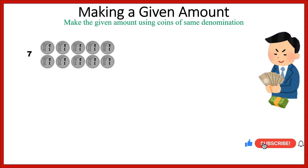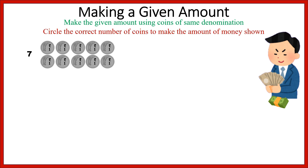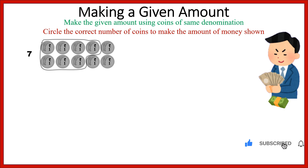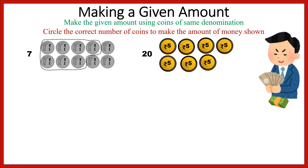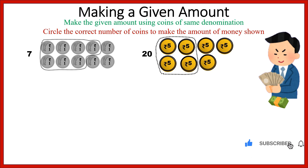Here you have some 1 rupee coins. The question is: circle the correct number of coins to make the amount of money shown. So there are 7 one-rupee coins here — 7 rupees. One more example: make the given amount. How much is that? 20 rupees. So you will take 4 five-rupee coins, which will give you 20 rupees.